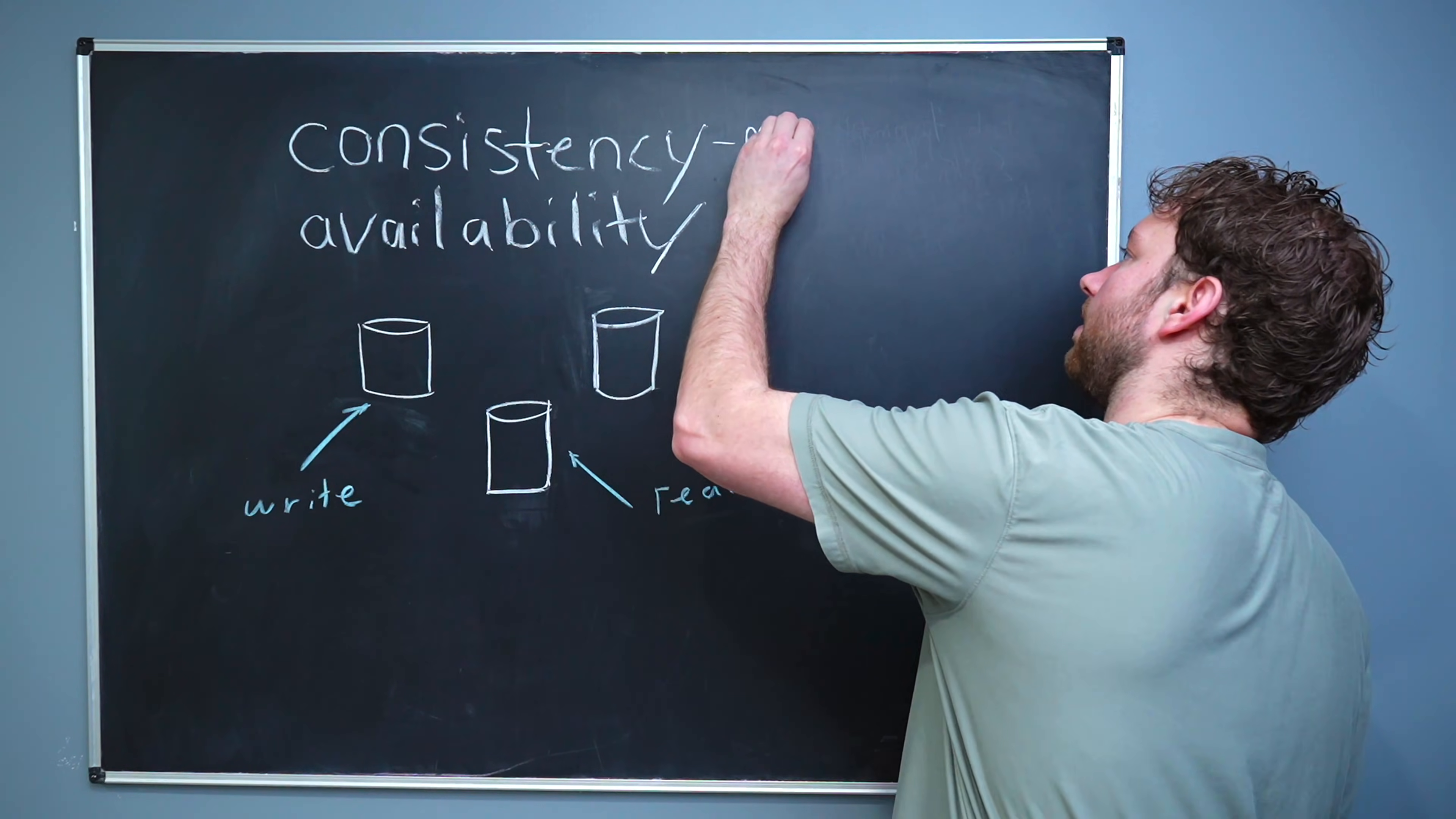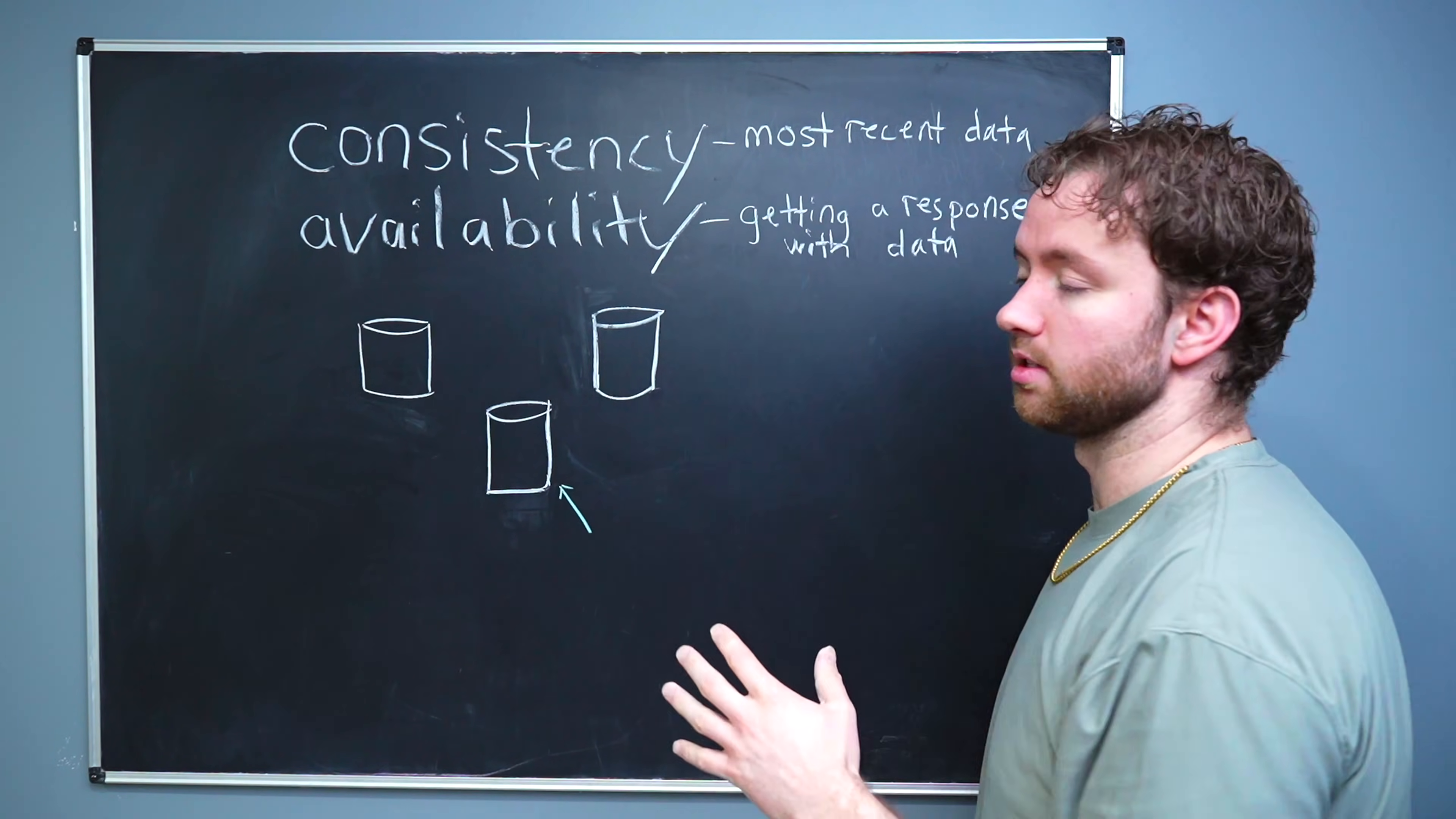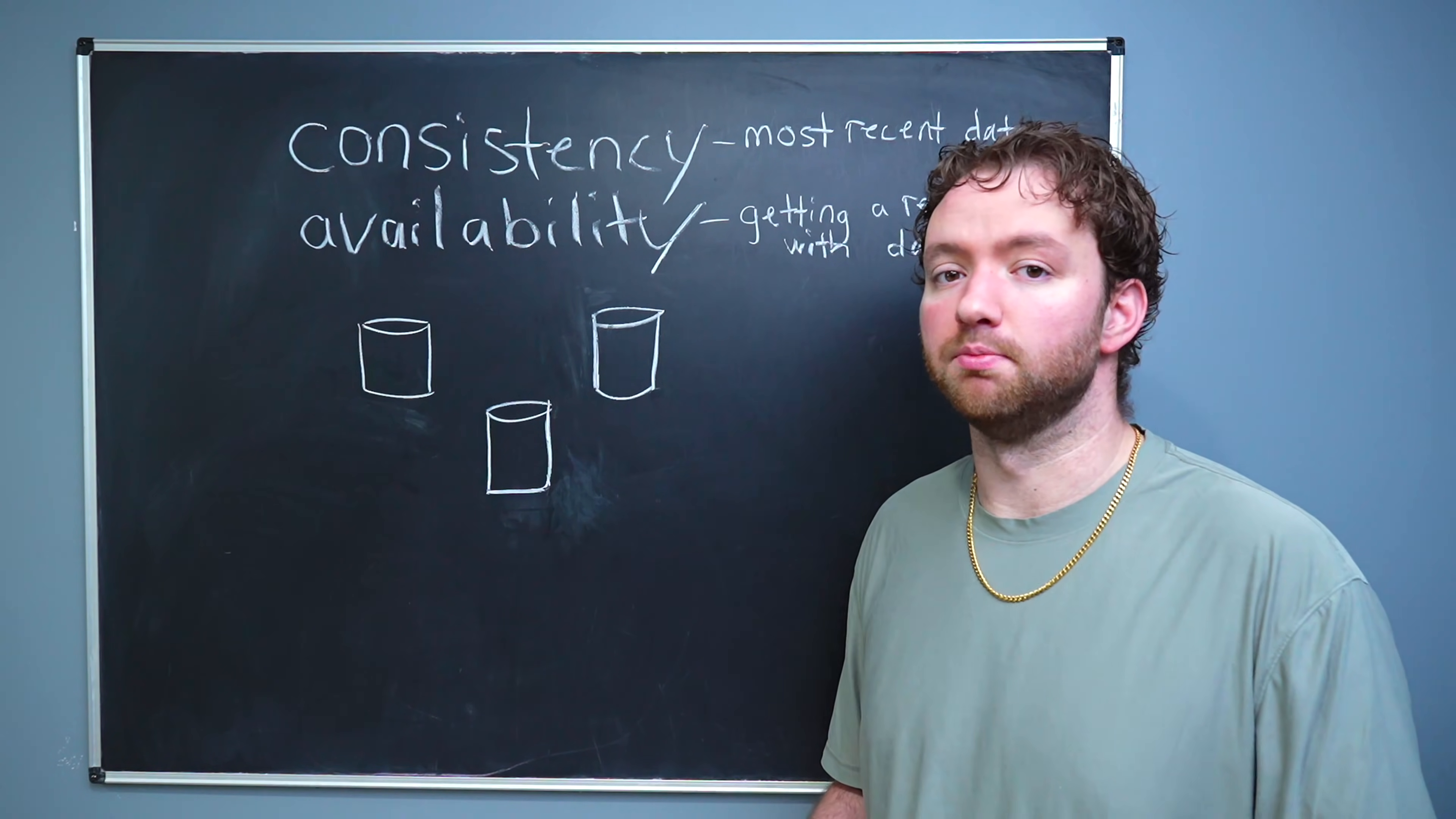So this is all about always having the most recent data. Now availability has to do with getting a response. So if I make a request to this database, it's going to give me back some data. So this has to do with getting a response. So consistency says the data must be the most up-to-date data, while availability says that there has to be some data given back. And the CAP theorem basically says you have to choose between these two options. You can't guarantee both of them.